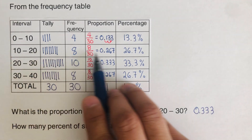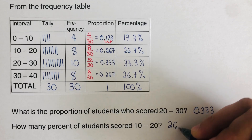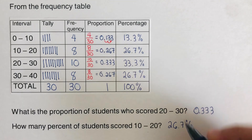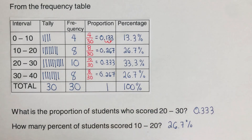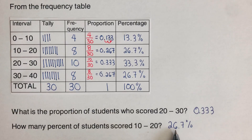Next question: how many percent of students scored 10 to 20? Looking at the percentage column for interval 10–20, the answer is 26.7 percent, or roughly 27 percent. This means that if you ask students in this class, about 27 percent of them will have scored between 10 and 20.